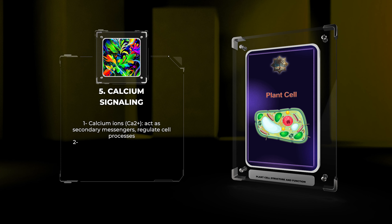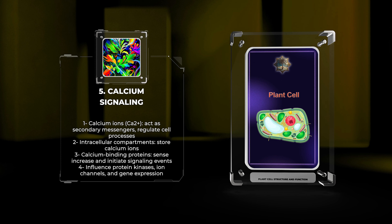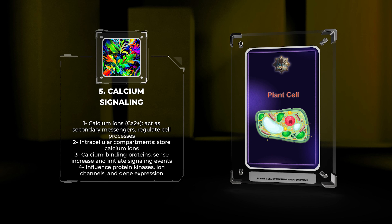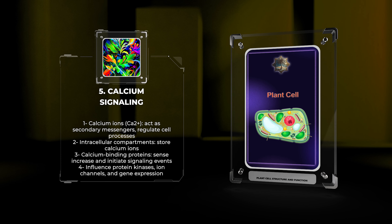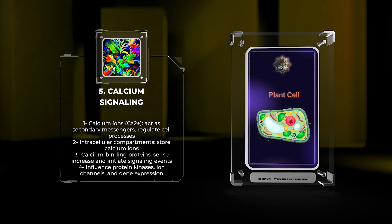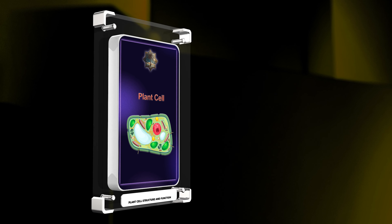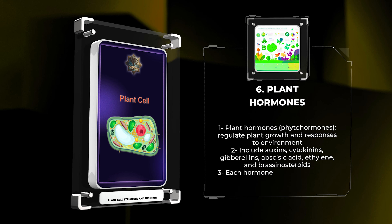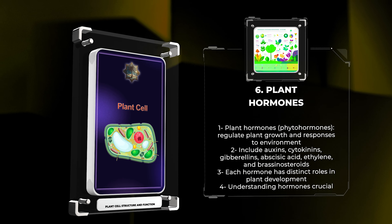Understanding secondary cell wall formation is important for improving biofuel production and resistance to pathogens. Calcium ions (Ca2+) act as secondary messengers, regulating cell processes in plants. Intracellular compartments store calcium ions, which can quickly move to the cytoplasm upon stimulation. Calcium-binding proteins sense the increase and initiate signaling events, influencing protein kinases, ion channels, and gene expression. Understanding calcium signaling is crucial to grasp plant responses to stimuli.